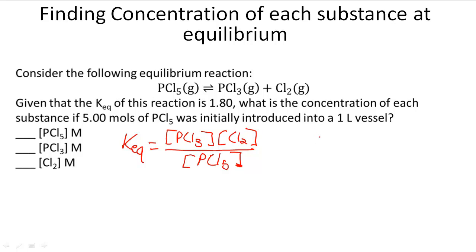Now we have to understand how this is going to work. Initially we have 5.00 moles of PCl5, and then we have 0 moles of PCl3 and 0 moles of Cl2.